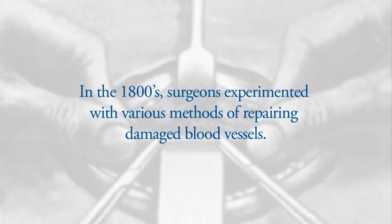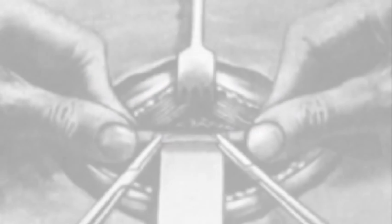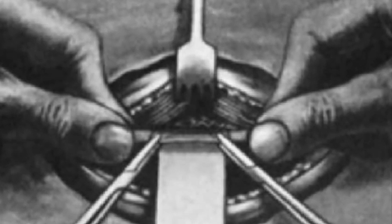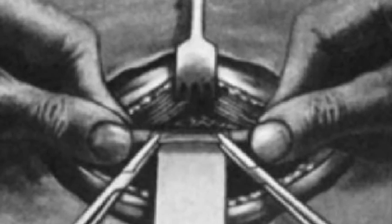In the 1800s, surgeons experimented with various methods of repairing damaged blood vessels, including removal of the damaged area of the vessel with insertion of a piece of hollowed glass or plaster.